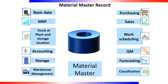Various user departments within a company work with material data, and each department stores different information relating to it. As a result, the data in a Material Master Record is subdivided according to the specific user department. Therefore, each user department has its own view of a Material Master Record and is responsible for maintaining this data.